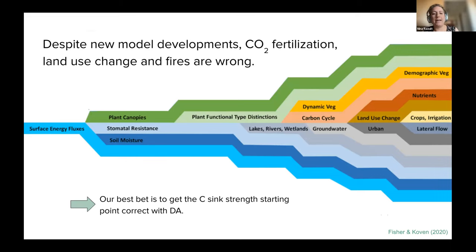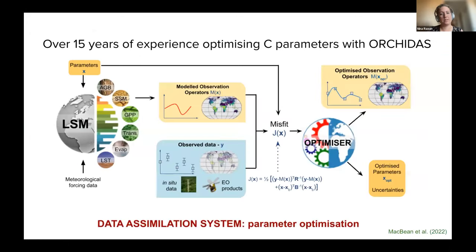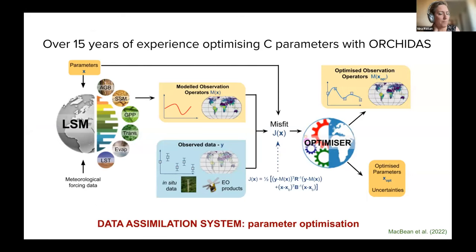We could argue that our best bet in getting the right carbon sink is actually to use data assimilation. I'm presenting work done during my time at LSE in France using the ORCHIDEE model and the ORCHIDUS system, which simulates parameters of the ORCHIDEE land surface model. Elodie briefly introduced the system earlier — it is a parameter estimation system, so we're looking at improving the internal parameters of the model to better match our outputs to observed data.